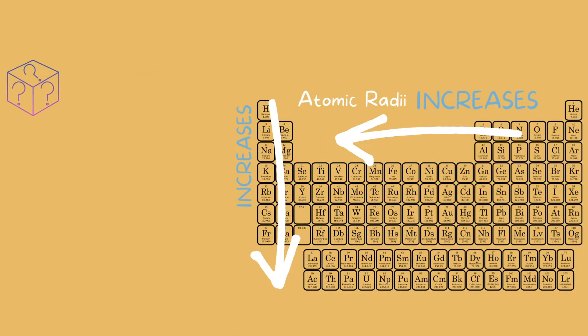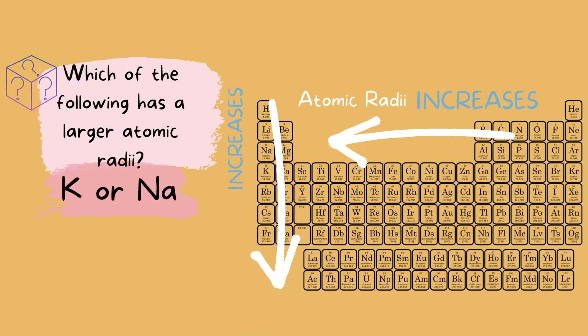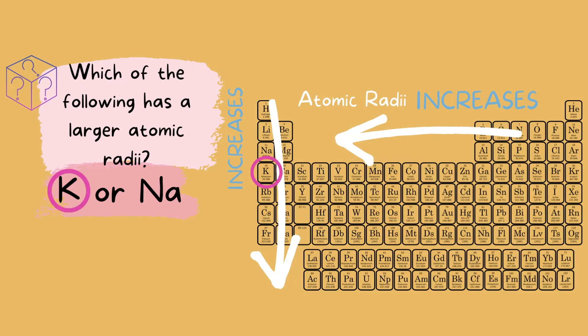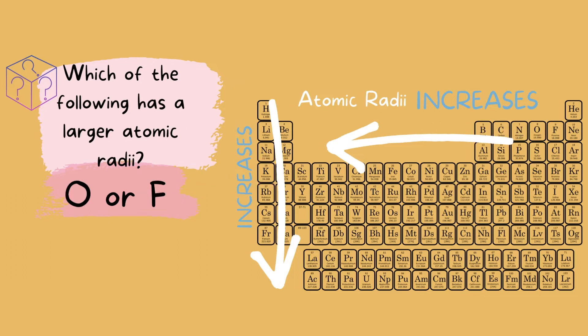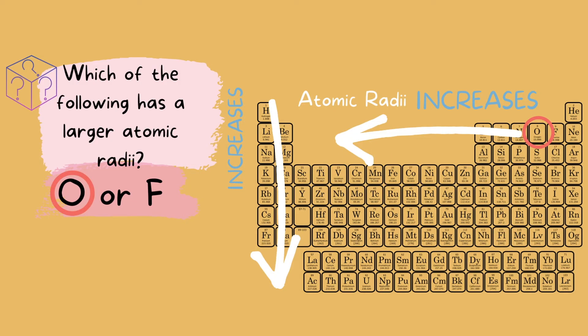Let's try a practice question. Which of the following has a larger atomic radii, potassium or sodium? Because potassium is lower than sodium, it has a larger atomic radii. How about oxygen and fluorine? Oxygen has a larger atomic radii.